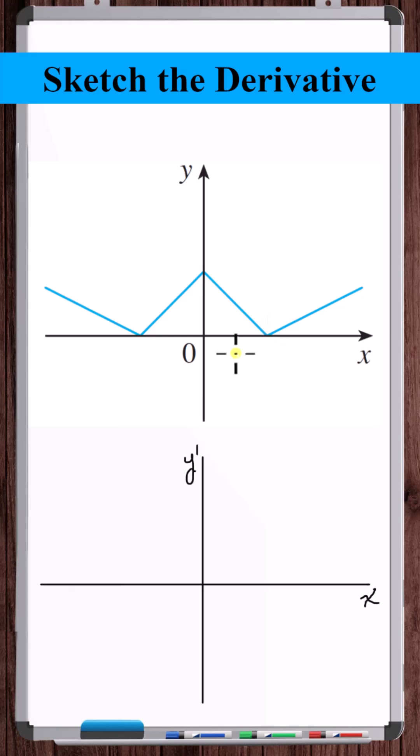At these kink points, the function is not differentiable because approaching from one direction, there's one slope and approaching from the other direction, there's another slope. What this means is that on the derivative graph at these kink points, we're going to have jump discontinuities.